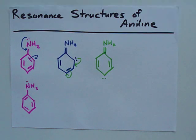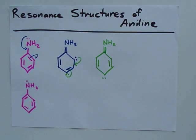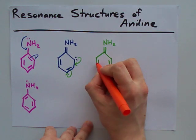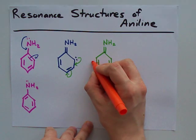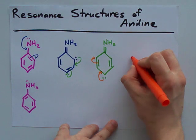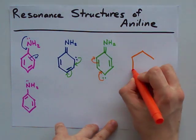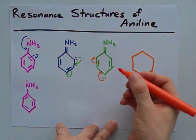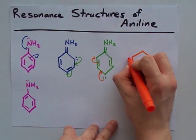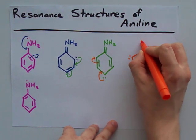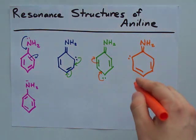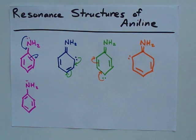We can keep going with this. We have this lone pair pushing its way back into the ring, and this double bond breaking open, being pushed to a lone pair on this carbon. So we still have our hexagon. Lone pair, and still with the double-bonded NH2. That double-bonded NH2 really messed up this ring structure.